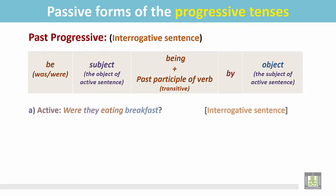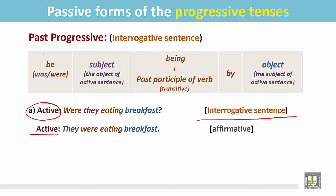See the examples. This is an active sentence: 'Were they eating breakfast?' It is an interrogative sentence. To change this active sentence into passive, first we have to change this interrogative sentence into a statement. The statement is: 'They were eating breakfast.' This statement is in the affirmative form.